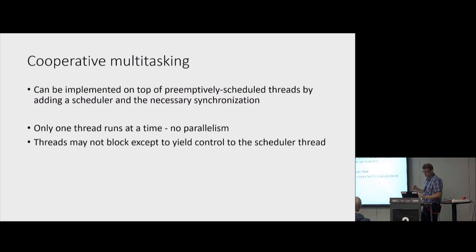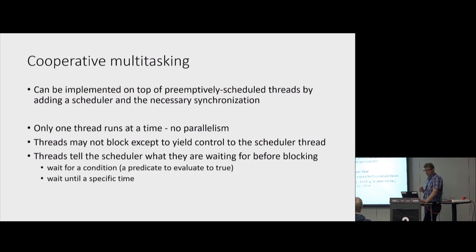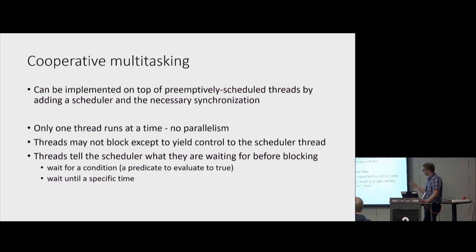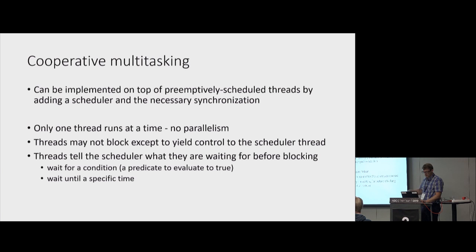Cooperative multitasking is pretty straightforward to implement. You can do it on top of pre-emptively scheduled threads — which is what you have in normal operating systems — just by adding a scheduler and some synchronization. What you achieve is that only one thread runs at a time, so you get no parallelism. This is the main point we want to achieve, because the missile application has 300 threads normally running on target. We don't aim to replicate the same architecture on target — we just want to run the missile application deterministically, controlling the flow of execution. Threads may not block except to yield control to the scheduler, and they have to tell the scheduler what they're waiting for before blocking — either a specific time or waiting for something to happen, like a message arriving in a queue.